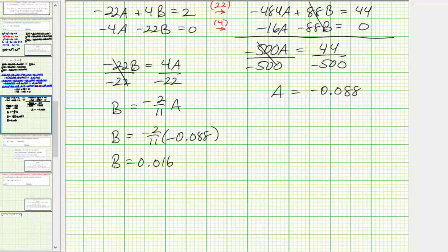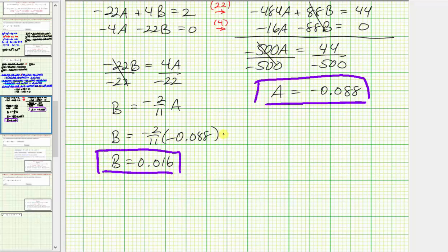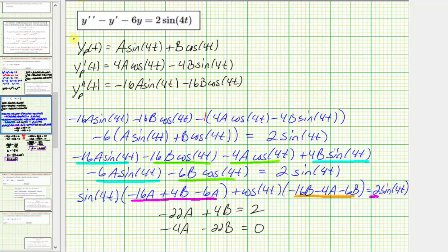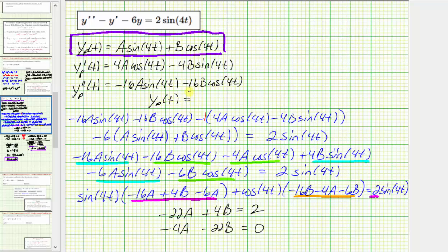Now that we know A and B, we know the particular solution big Y sub p of t. Big Y sub p of t equals A, which is negative 0.088, times sine four t, plus B, which is 0.016, times cosine four t.